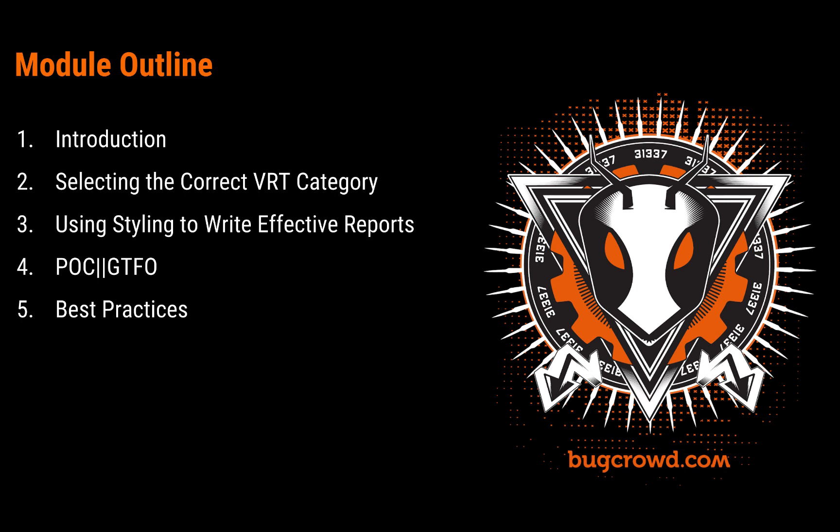Now let's talk about the module outline at a high level. First, we'll talk about the introduction of why you should make a good submission. Then we'll talk about how to select the correct VRT category, how to use styling to write effective reports, how to make a POC, and lastly, best practices to be really efficient about making your submissions.